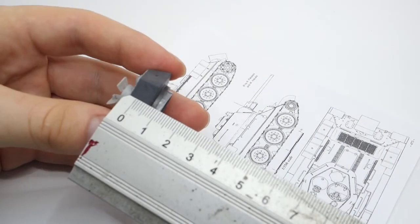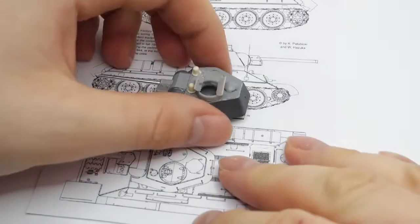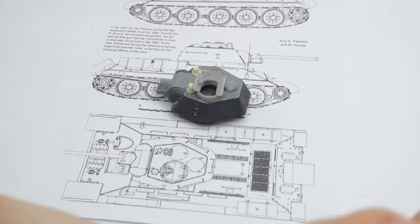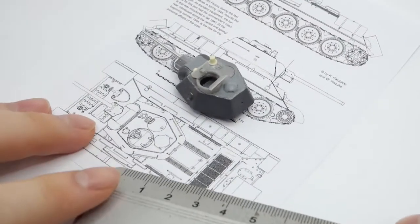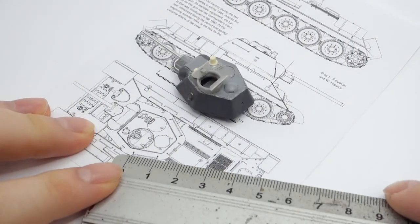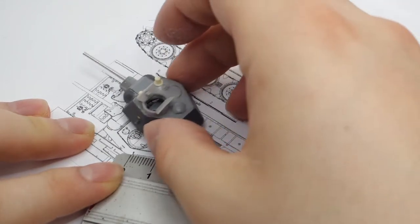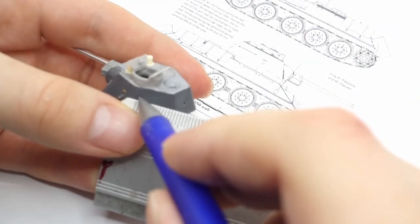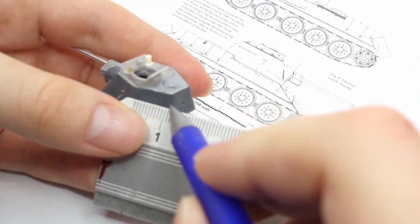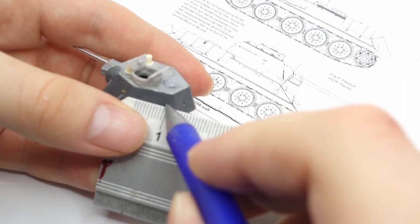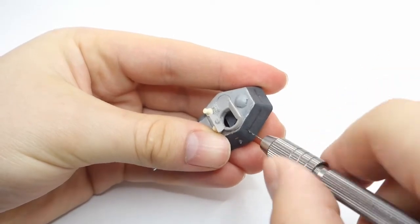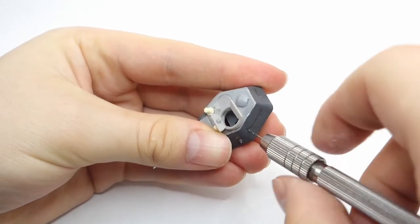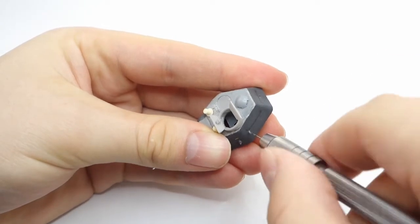Next I started measuring the correct position of the turret grab handles. For this purpose I've used a ruler and 1 to 72nd scale plans of the vehicle. After I located the correct places, I've drilled out holes using 0.5 mm drill.